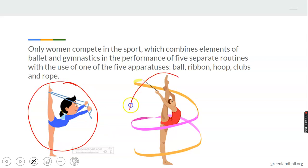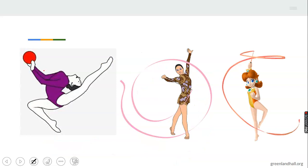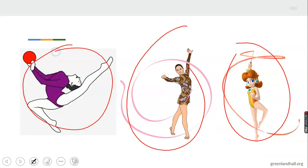This sport is specifically for women, which combines elements of ballet and gymnastics in the performance of five separate routines with the use of one of five apparatus. For example, you can use a ball, ribbon, hoop, clubs, or rope. Without these hard apparatus or equipment we can go on with our rhythmic activities. This is a very typical example - you can see here what they are doing, these are all rhythmic activities.